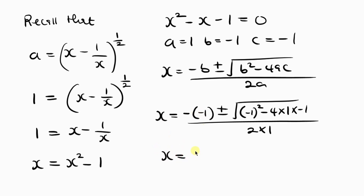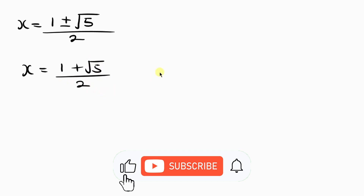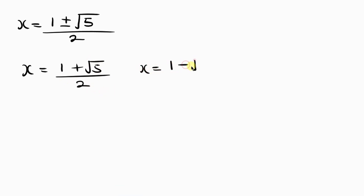Substituting: x equals negative of negative 1, plus or minus the square root of negative 1 squared minus 4 times 1 times negative 1, divided by 2 times 1. This gives x equals 1 plus or minus the square root of 1 minus negative 4, which is the square root of 5, all over 2. For those familiar with this, this is the golden ratio.